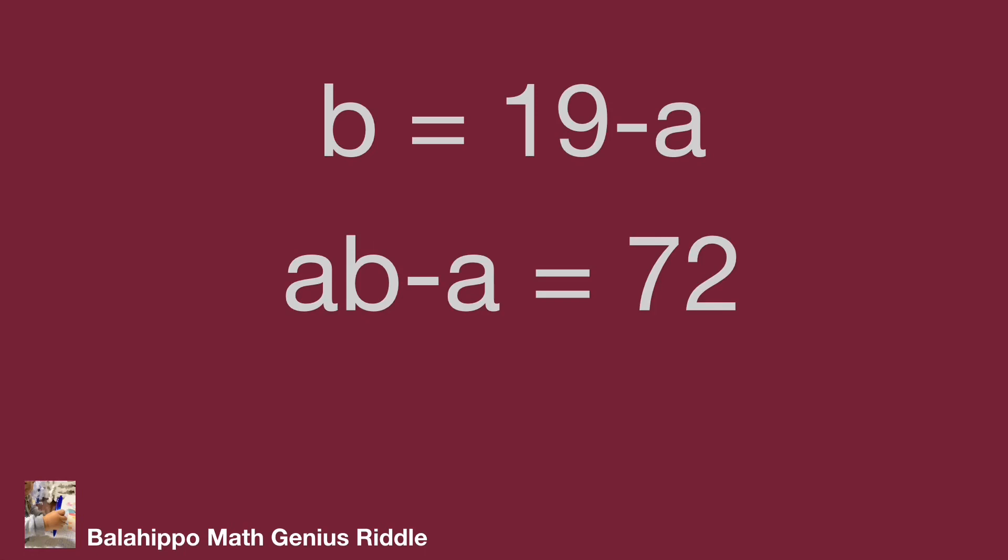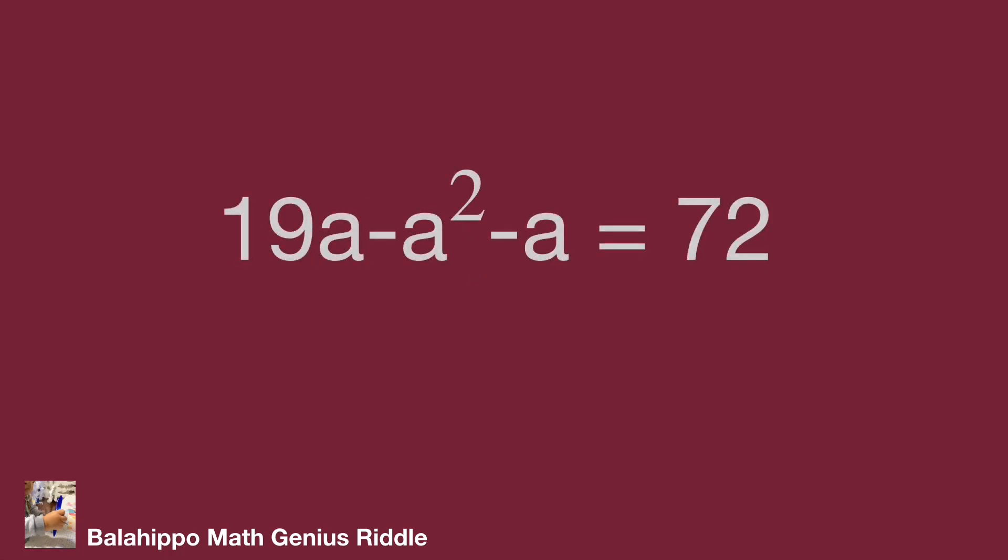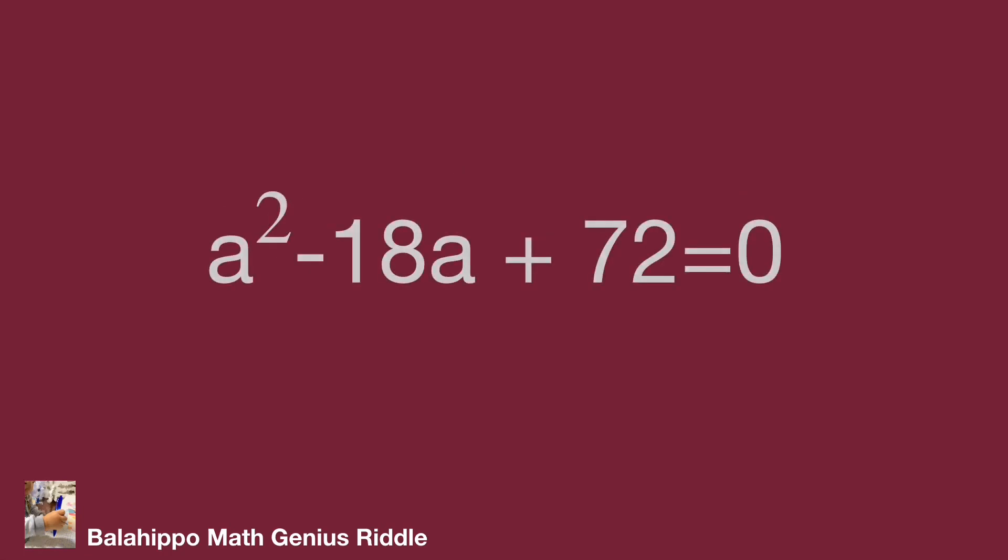Substitute b by 19 - a into ab - a = 72. The equation becomes a(19 - a) - a = 72. Develop and simplify, then adjust the item sequence. We have a² - 18a + 72 = 0.